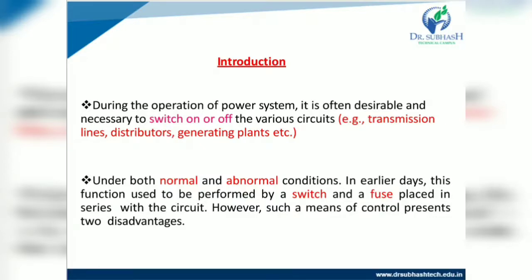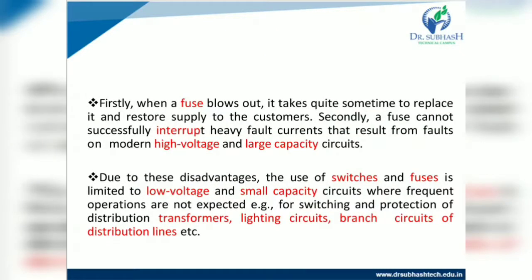However, such a means of control presents two disadvantages. First, when a fuse blows out, it takes quite some time to replace it and restore supply to the customer. Secondly, a fuse cannot successfully interrupt heavy fault current that results from faults on modern high voltage and large capacity circuits. Due to these disadvantages, the use of switch and fuse is limited to low voltage and small capacity circuits like domestic use, frequent operation not expected, switching and protection of distribution transformers, lighting circuits, and branch circuits of distribution lines.